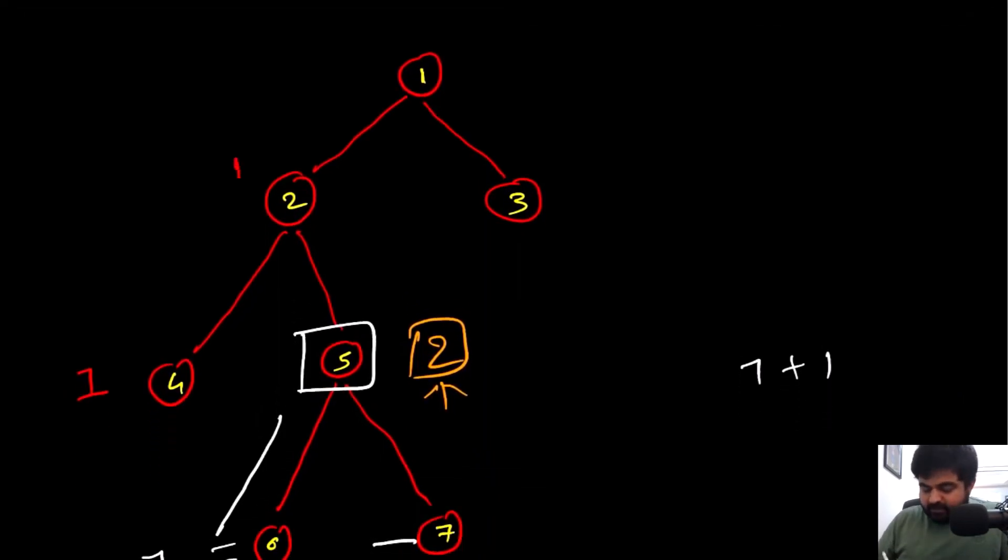Now we have these two values. Based on these, it becomes pretty easy for us to identify what is the maximum depth at position number 2. We will take whatever the maximum value amongst these two is—the maximum value is 2—so we can do 2 plus 1, which is 3. So 3 is the maximum depth we can achieve at node number 2. For position number 3, the maximum depth we can achieve is only 1 because it does not have any more children.